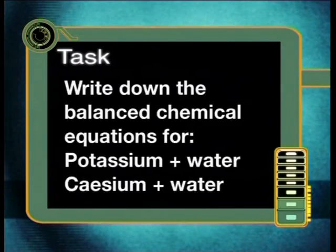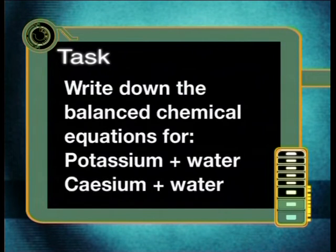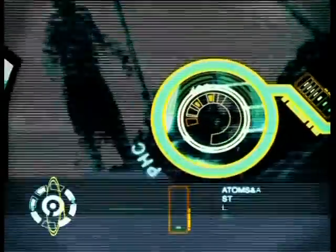Now, with this information at your fingertips, I'm sure you are ready to complete today's task. Write down the balanced chemical equations for potassium plus water and cesium plus water. I hope you will join me for our final lesson in this series where we will look at the reactions of the alkaline earth metals in water. Until then, goodbye.